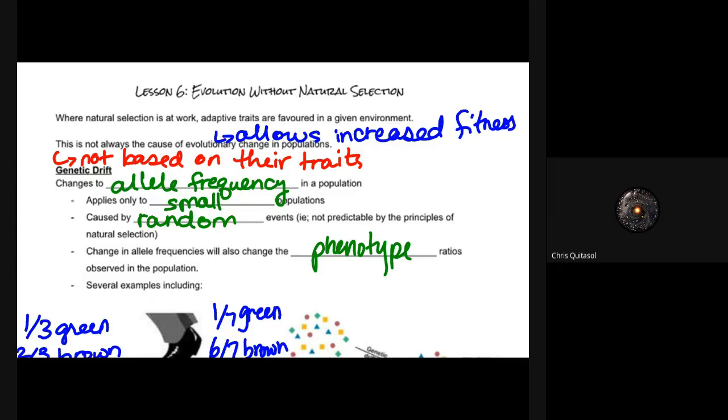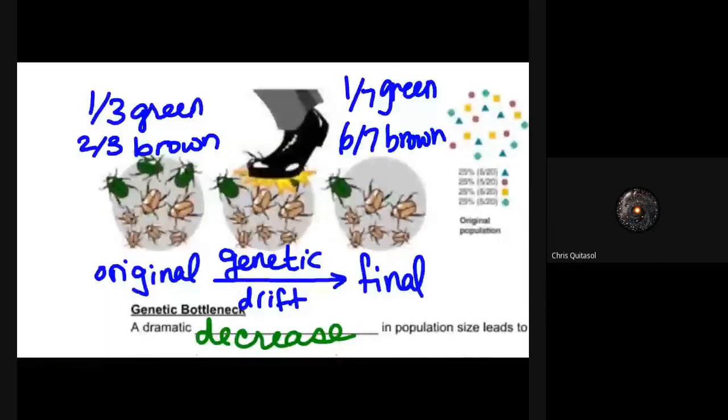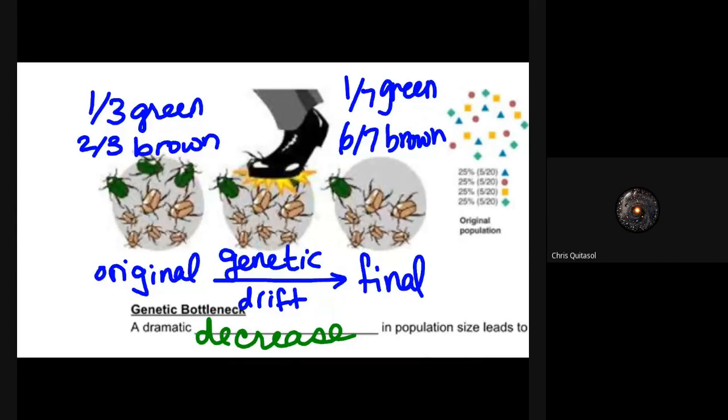One aspect of genetic drift is if we have a population of insects—in this case beetles—where two-thirds are brown and one-third are green. By accident, someone steps on two of the green bugs. This completely changes the population ratio, and we call that genetic drift. We go from one-third green, two-thirds brown to one-seventh green, six-sevenths brown. That final population tally as a result of that incident is genetic drift.